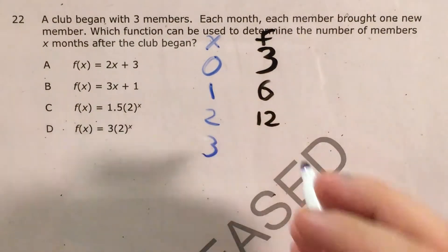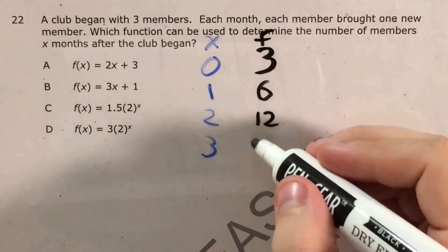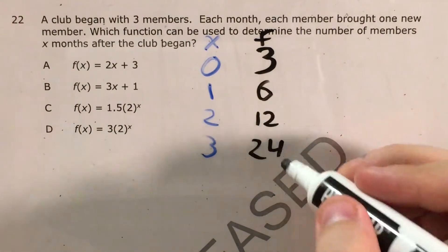X is three. And twelve times two, if each member brings one new one, that's twelve times two, which is twenty-four.